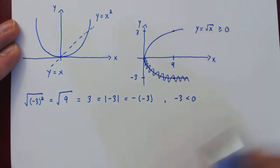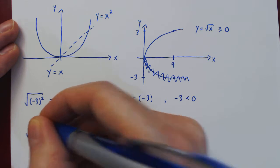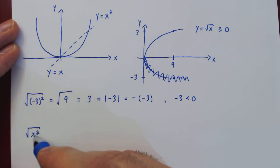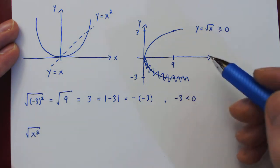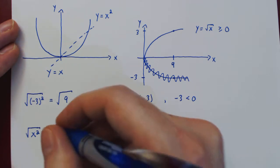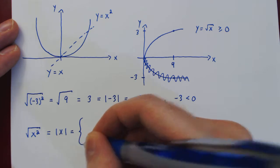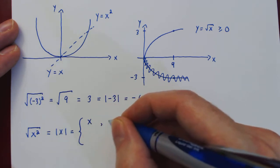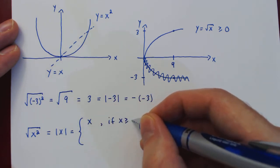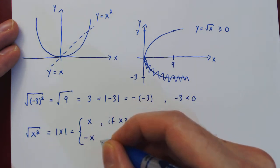By squaring negative 3, then taking the positive branch of the square root, we don't get back the initial number, but the initial number without the negative sign — that is, the initial number in absolute value. Or equivalently, we get the negative of the initial number, since the number we initially squared was negative. In general, if you take the square root of x squared: since squaring a negative x cancels the negative, and we pick the positive branch, the result is always positive or 0. So this simplifies not to x, but to the absolute value of x — a piecewise function equal to x if x is non-negative, and to negative x if x is negative.